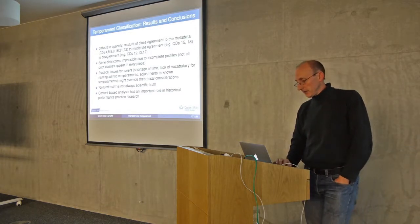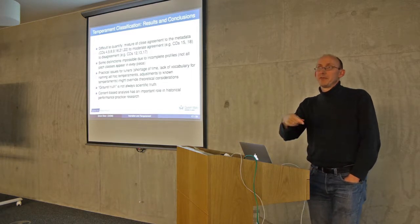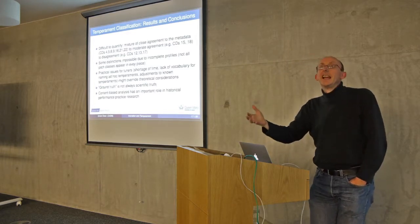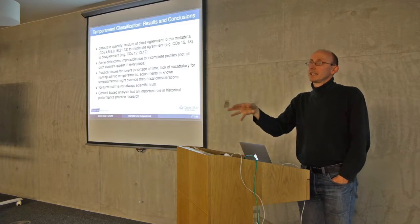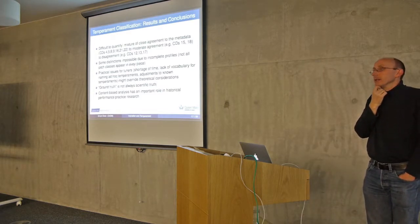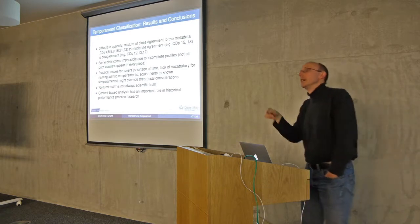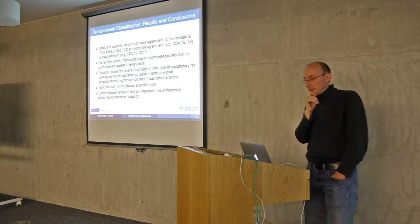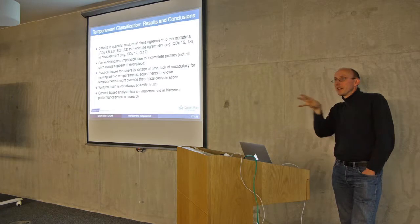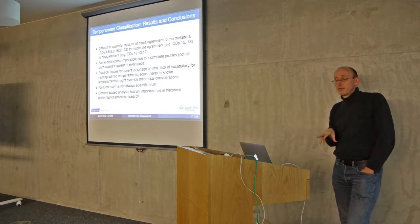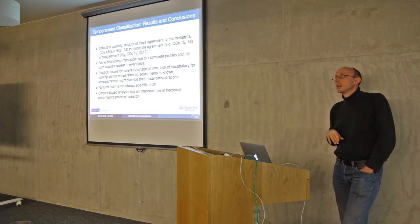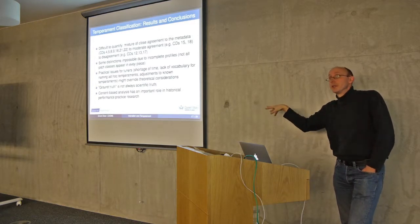So we conclude: ground truth is not always scientific truth. We would normally treat something written on the CD sleeve notes as ground truth — as if our algorithm has to return exactly the same thing as what's written down. But I don't think that's always the right way to go. Sometimes we can measure more accurately than what people have written down, because what they're writing is not a scientific statement. Quite often people will say: 'I tuned to this temperament as a starting point, and then adjusted so it would sound good with this piece' — and by doing so they might have moved closer to another temperament without realising it.